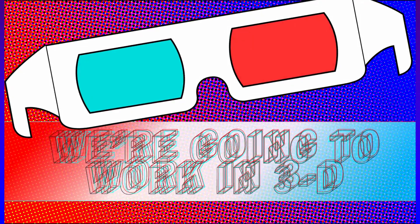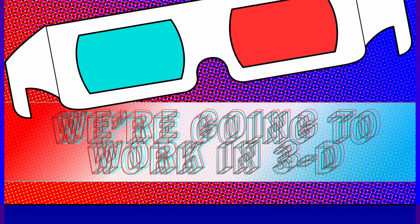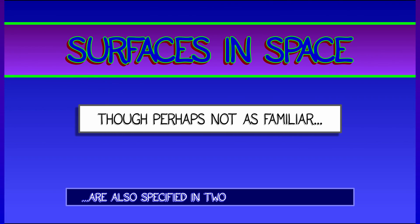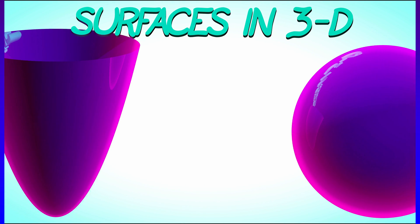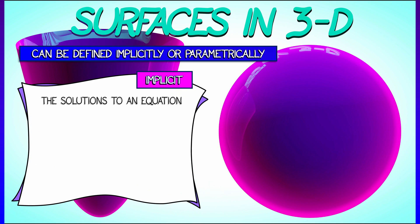Now, we could work with curves in 3D, but it's going to be more to our purposes to take a look at surfaces. And though these might not be as familiar, they are also specified in the same two complementary ways. We can talk about specifying a 2D surface in 3D, implicitly or parametrically.